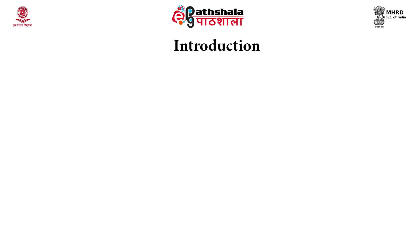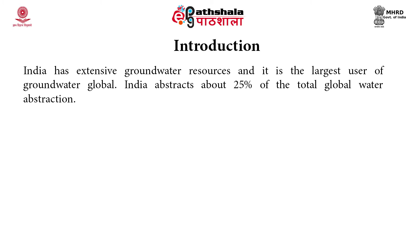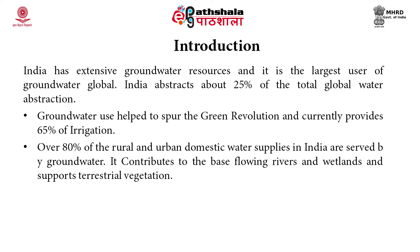India has extensive groundwater and is the largest user of groundwater globally. India abstracts about 25 percent of the total global water abstractions. Groundwater use helped to spur the green revolution and currently provides 65 percent of the irrigation. Over 80 percent of the rural and urban domestic water supplies in India are served by groundwater. It contributes to the base flow of rivers and wetlands and supports terrestrial vegetation.